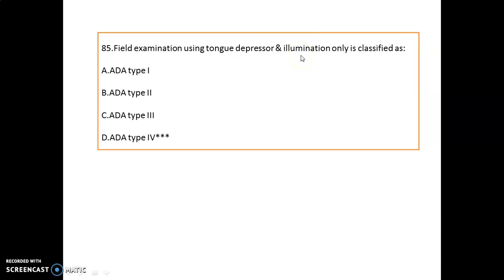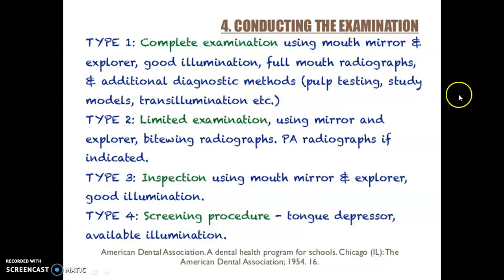A field examination using a tongue depressor and illumination is classified as Type 4 ADA examination. Type 1 is a complete examination using mouth mirror, explorer, good illumination, full-mouth radiographs, and additional diagnostic methods. Type 2 is a limited examination. Type 3 is done using a mouth mirror and explorer with good illumination. Type 4 is a screening procedure using a tongue depressor and available illumination.